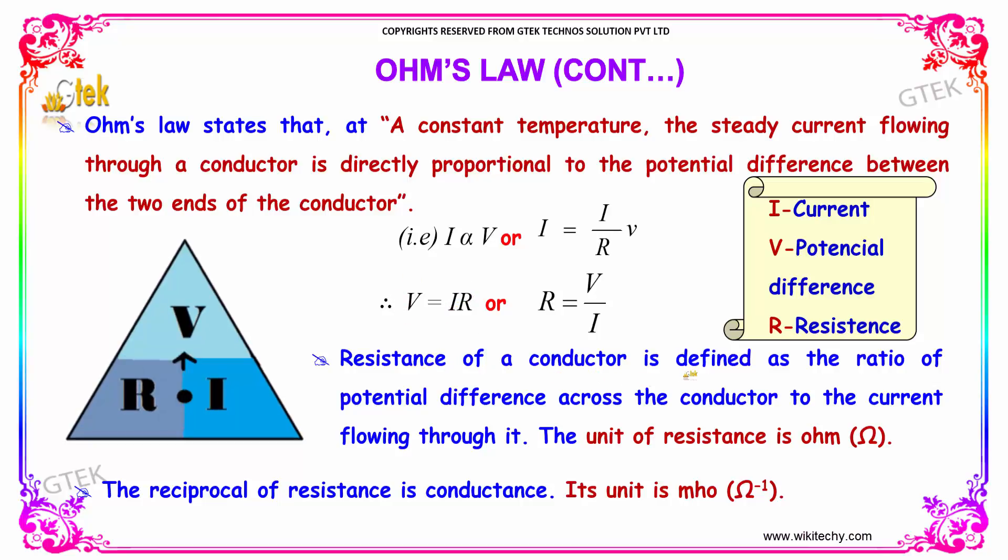The resistance of a conductor is defined as the ratio of potential difference across the conductor to the current flowing through it. The unit of resistance is Ohm. The reciprocal of resistance is considered as conductance. Its unit is Mho, the inverse of Ohm.